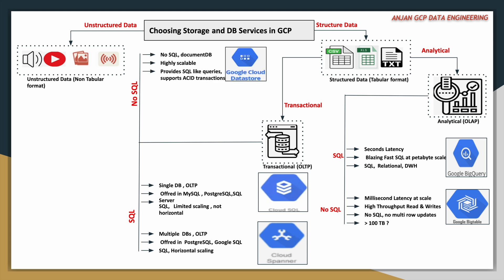If you are expecting NoSQL use cases, you can go for Google Cloud Datastore. You can store document-type data into this service — it is called a Document DB. It is also highly scalable. It does not support standard SQL, but it supports SQL-like queries and also supports ACID transactions like traditional databases.